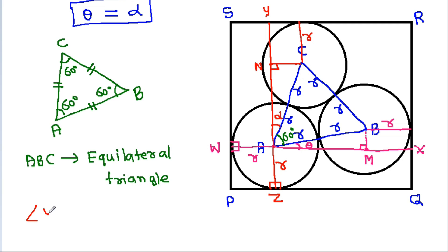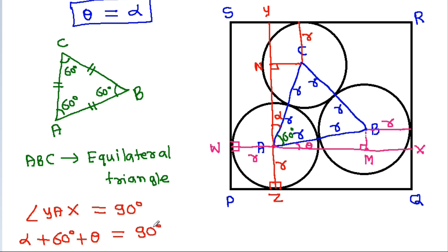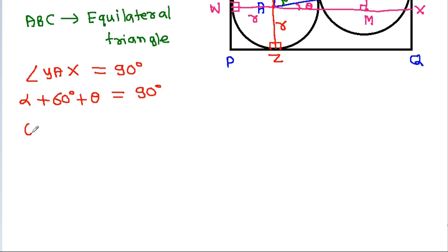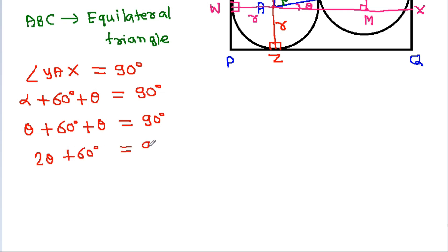Angle YAX will be 90 degrees. And angle YAX equals α minus 60 degrees minus θ, which equals 90 degrees. Since α = θ, we get 2θ + 60° = 90°, so 2θ = 30 degrees, and θ = 15 degrees.